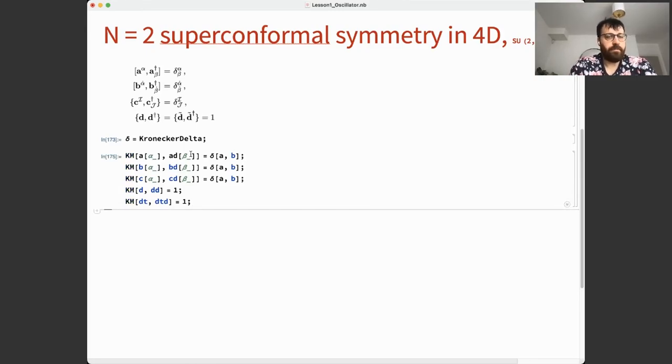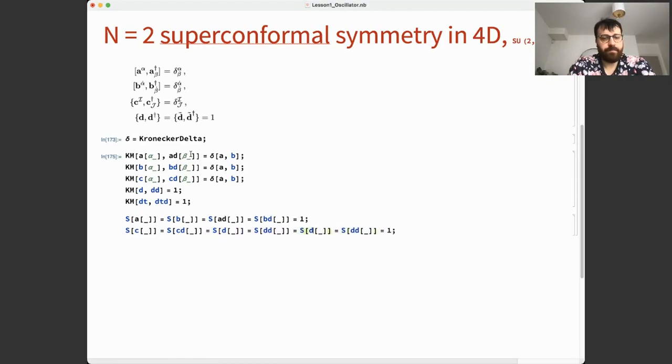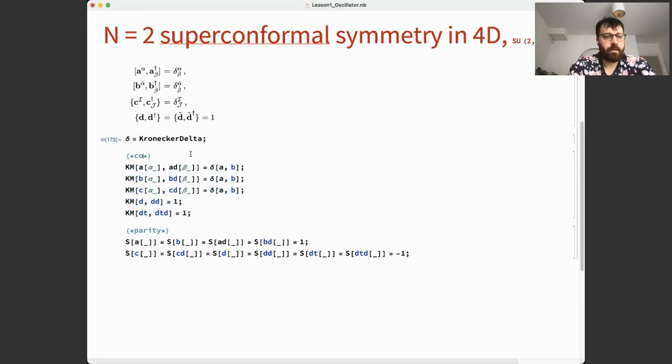Now to keep track of which separators is fermionic, which bosonic, I need to define the signature. S is just a symbol, but I say that A, B, A dagger, B dagger have parity one so they're bosonic. And then for C, C dagger, D, D dagger, and D tilde, D tilde dagger, the parity is minus one.